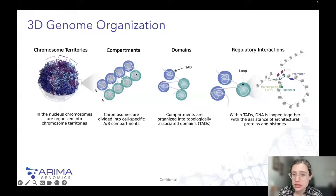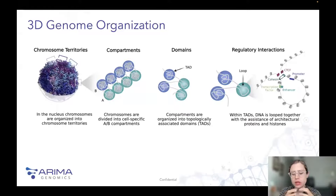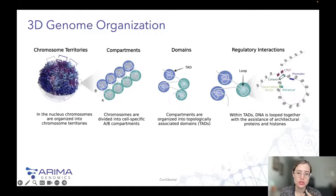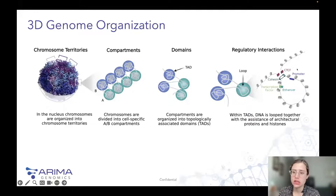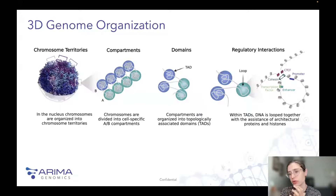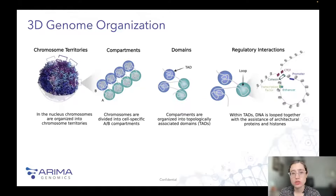We can zoom further inside the compartments and identify chromatin domains called Topologically Associating Domains, or TADs. The main function of a TAD is to isolate genes from enhancer elements that shouldn't be acting on them — this is the level of chromatin organization we talked about in the leukemia case. Zooming even further into TADs, we get to regulatory interactions called loops. Loops are folding of the chromatin bringing together promoter and enhancer elements, mediated by structural proteins such as CTCF, cohesin, and others through the loop extrusion model.